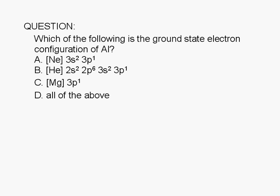Which of the following is the ground state electron configuration of an aluminum atom? A. Neon core 3s² 3p¹. B. Helium core 2s² 2p⁶ 3s² 3p¹. C. Magnesium core 3p¹. Or D. All of the above.